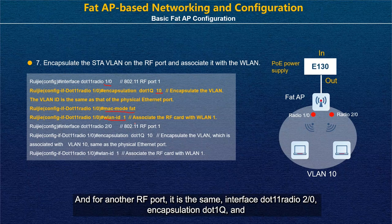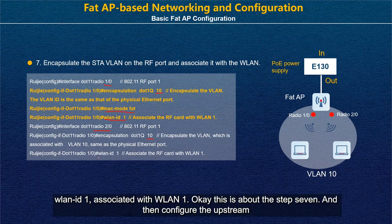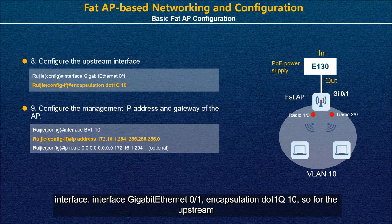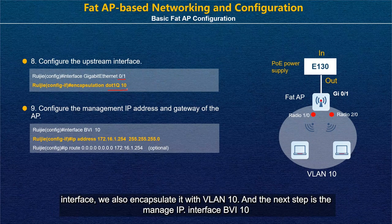For the second RF port, the configuration is the same: 'interface .11 radio 2.0', encapsulate with .1Q VLAN 10, and associate with WLAN 1. Then configure the upstream interface: 'interface .1', encapsulate with .1Q VLAN 10, so the uplink interface is also encapsulated with VLAN 10.